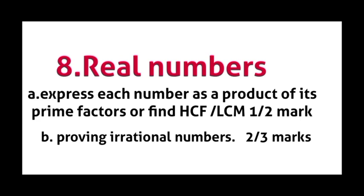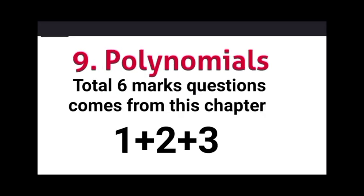From Real Numbers: expressing a number as a product of its prime factors or finding HCF and LCM carries one or two marks. Proving irrational numbers carries two or three marks. Total four to five marks — overall six marks come from this chapter. For polynomials, you have a one-mark question, a two-mark question, and questions with long calculation carrying three marks. Total six marks from polynomials.